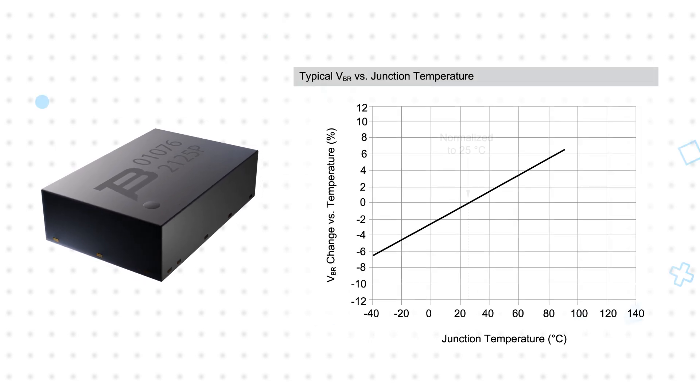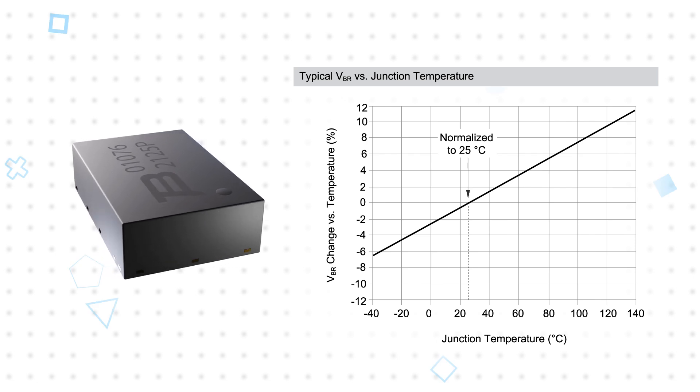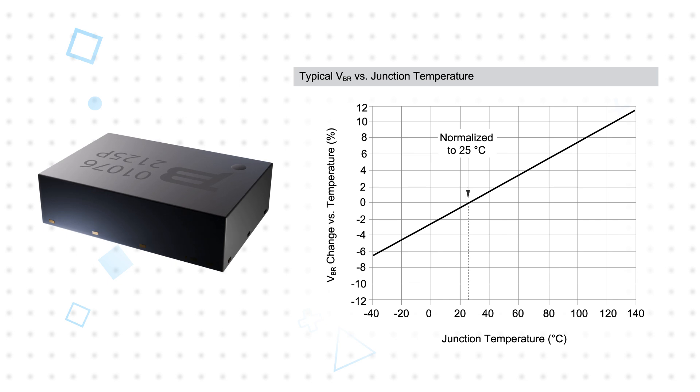They also have clamping voltages just above their breakdown voltage, allowing for uninterrupted operation of the protected circuit during the surge event while providing reliable protection to the downstream components.